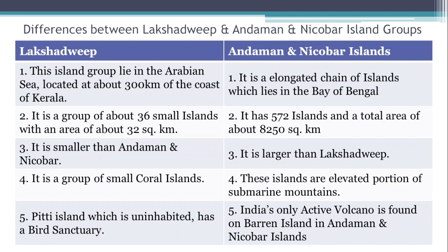Second point — Lakshadweep: it is a group of above 36 islands with an area of about 32 square kilometers. Andaman Nicobar: it has 572 islands and a total area of above 8,250 square kilometers.